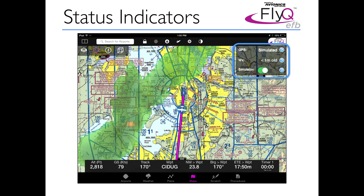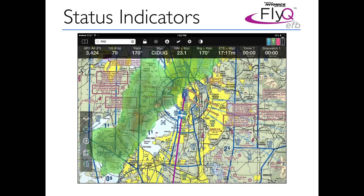We think that was a problem. So in FlyQ EFB 2.0, we got rid of that, and instead in the upper right corner we put in this indicator. It has all the same information — in fact, twice as much information — in four small colored bars that are easy to see at a glance. And they're visible no matter which tab page you're on: airports, map, procedure, whatever. It's always visible, always available.